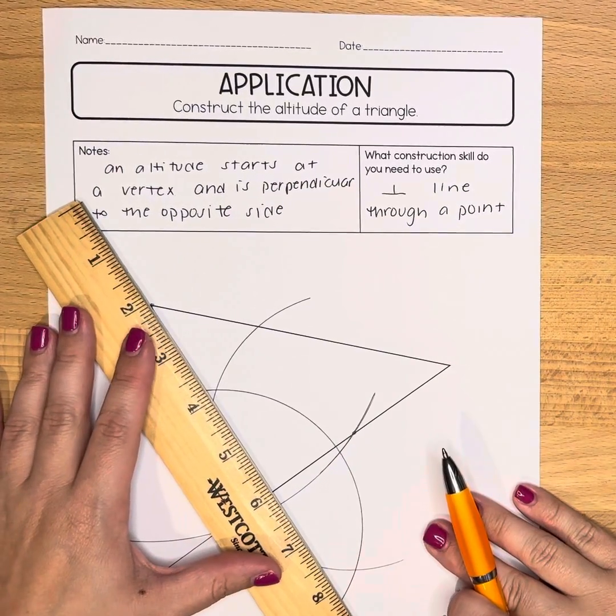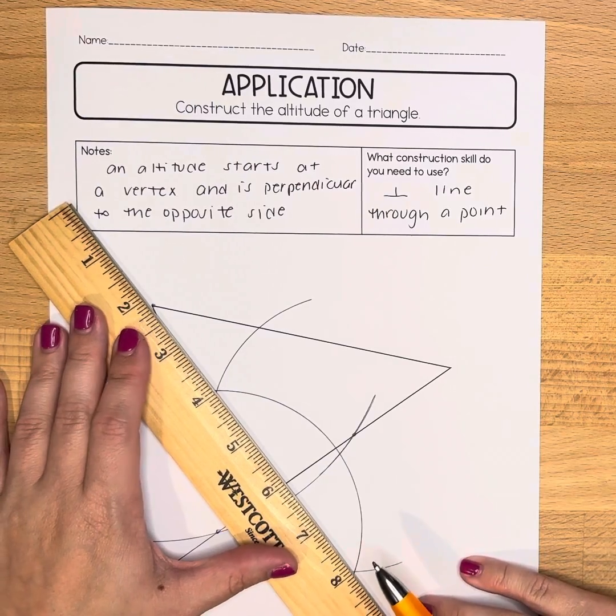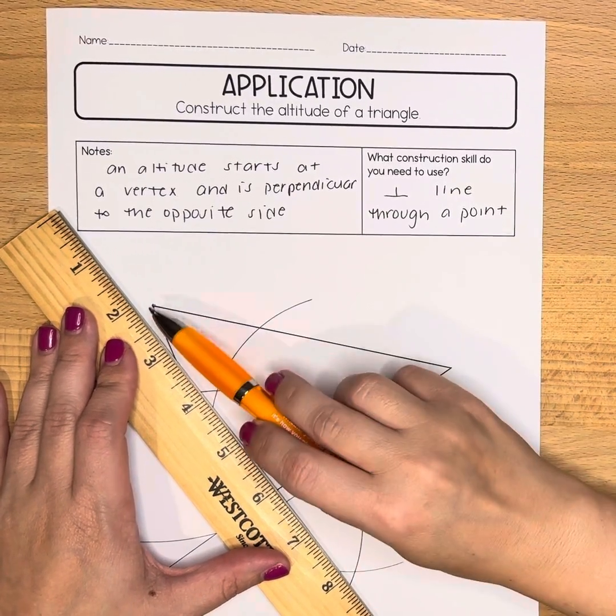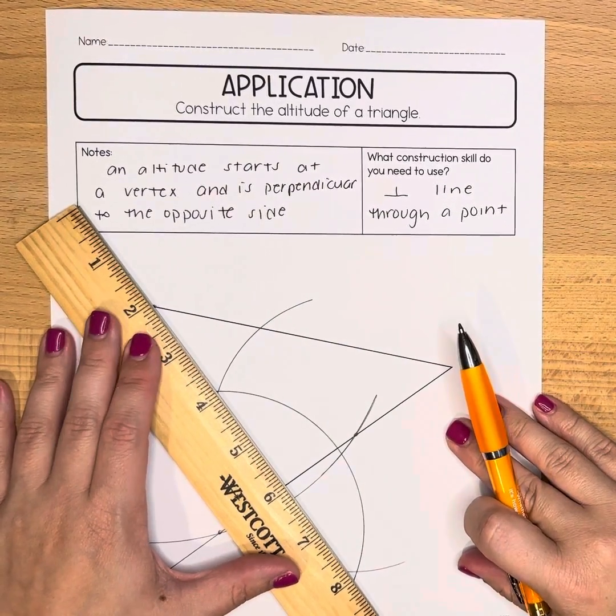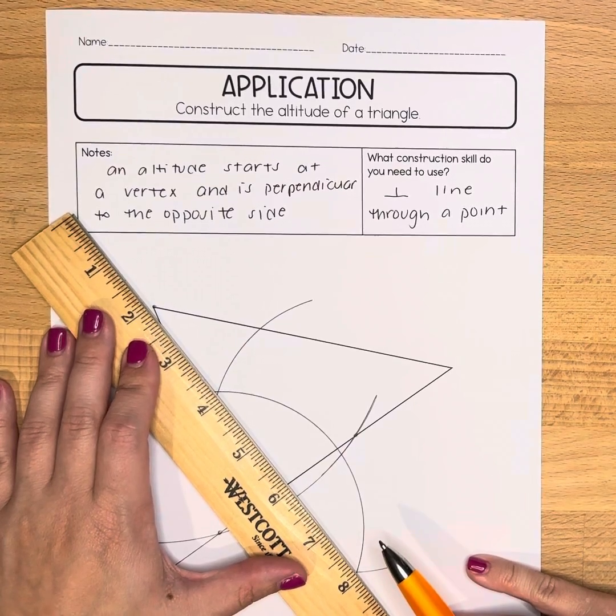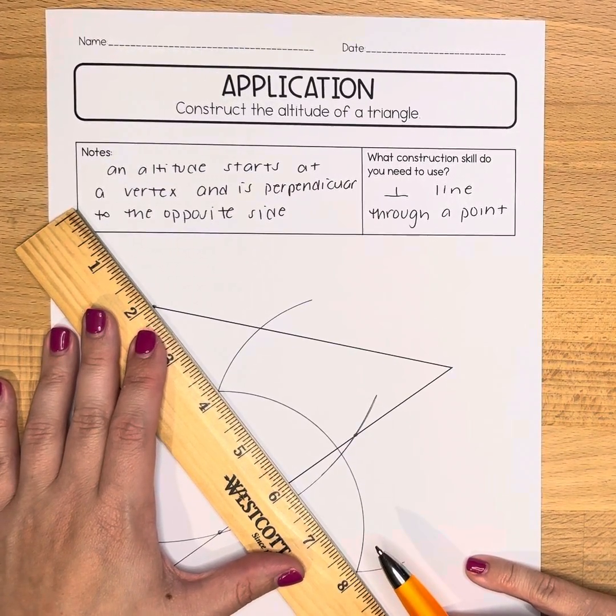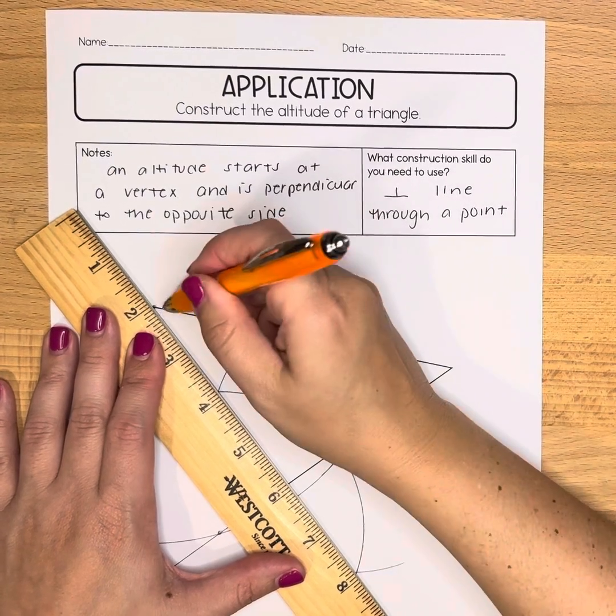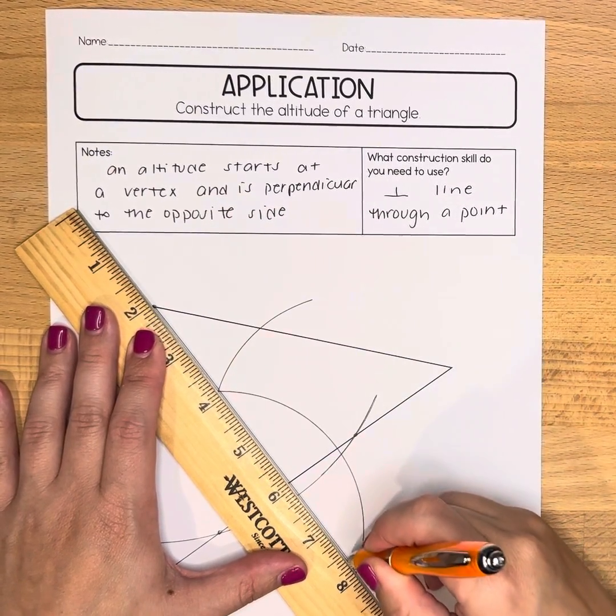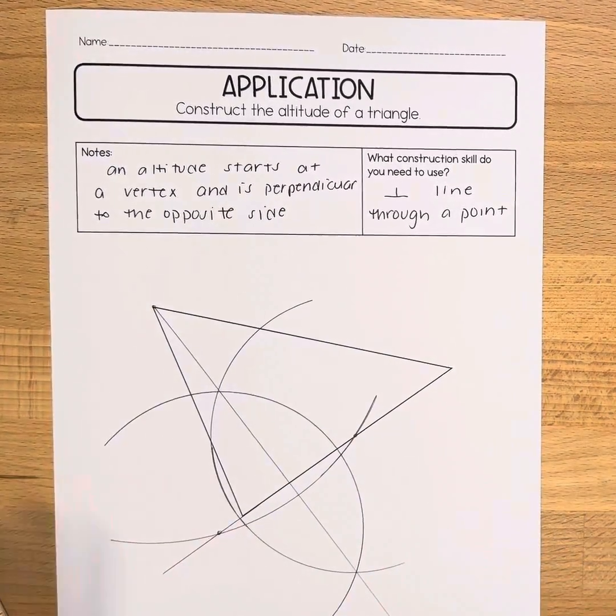Finally we are going to use our straight edge and we are going to line up the two intersections and that vertex. You're really lining up three things here, so really adjust your straight edge to make sure it's accurate. When you're happy with it, you're going to draw a nice straight line through.